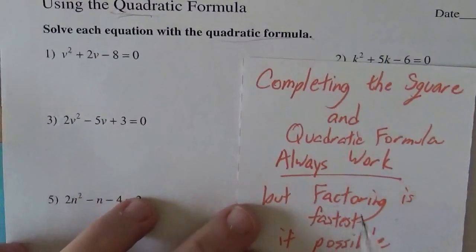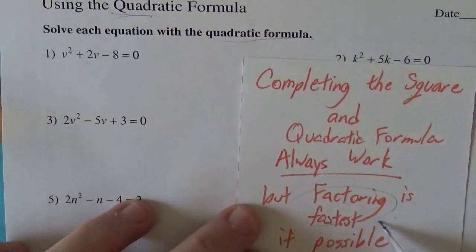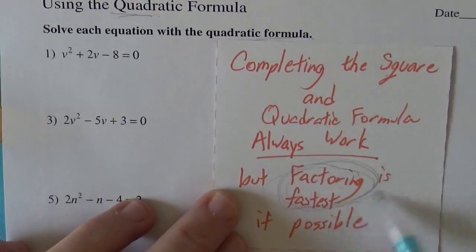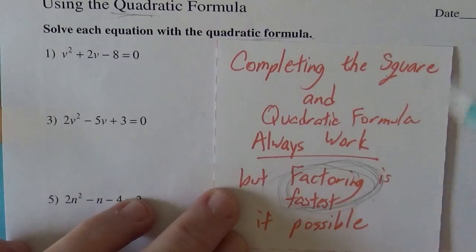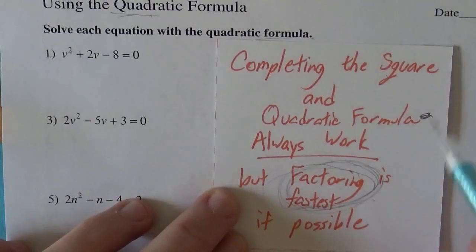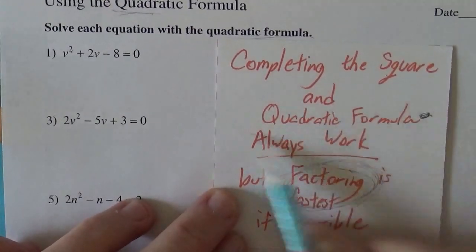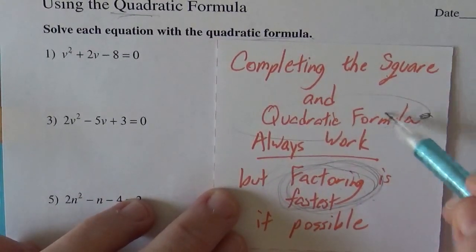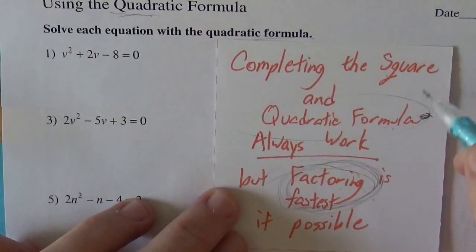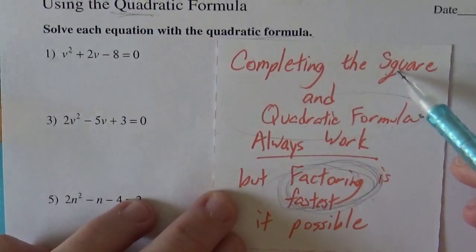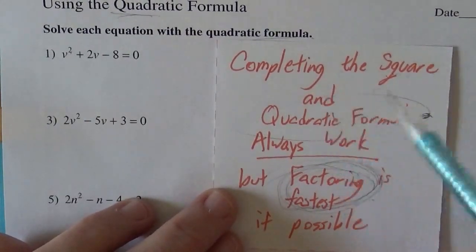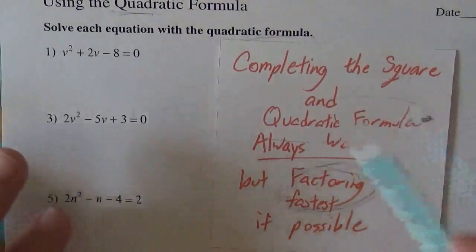The way I always attack it: factoring is fastest. If you can do it, try that first. And then if that doesn't work, I go to quadratic formula, because it's pretty brainless and you just kind of crunch through it. Quadratic formula is derived from completing the square, so you're always welcome to do that as well, and it works fine too.